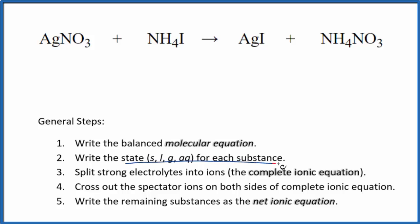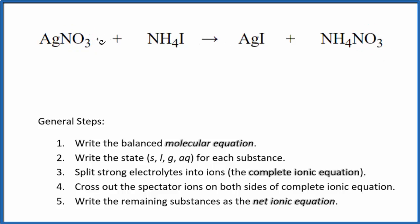Next, we'll write the states for each substance. If you know your solubility rules, nitrates are very soluble. So the nitrates here get AQ — aqueous — for soluble, meaning they dissolve and they're going to split apart into their ions. Ammonium compounds are also very soluble, so put AQ after that — aqueous.